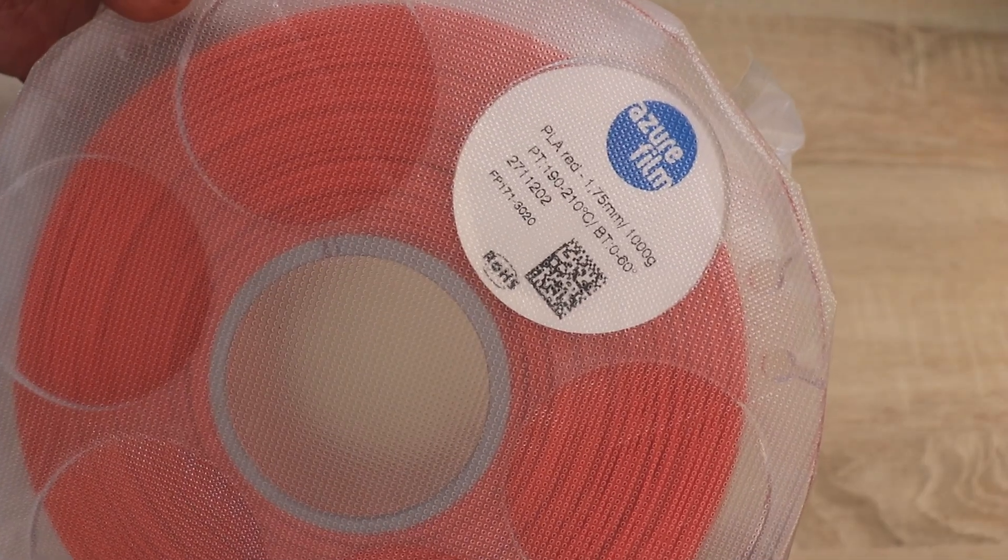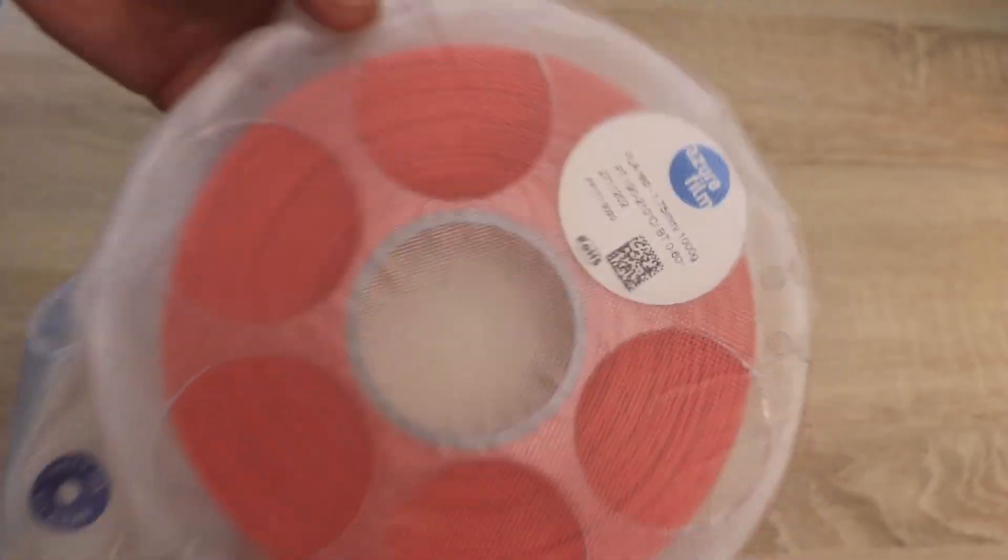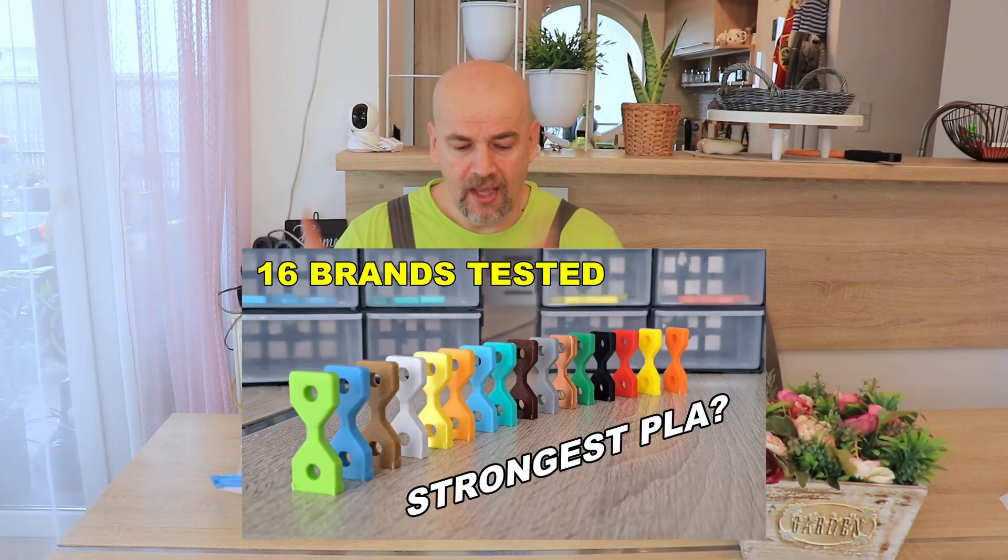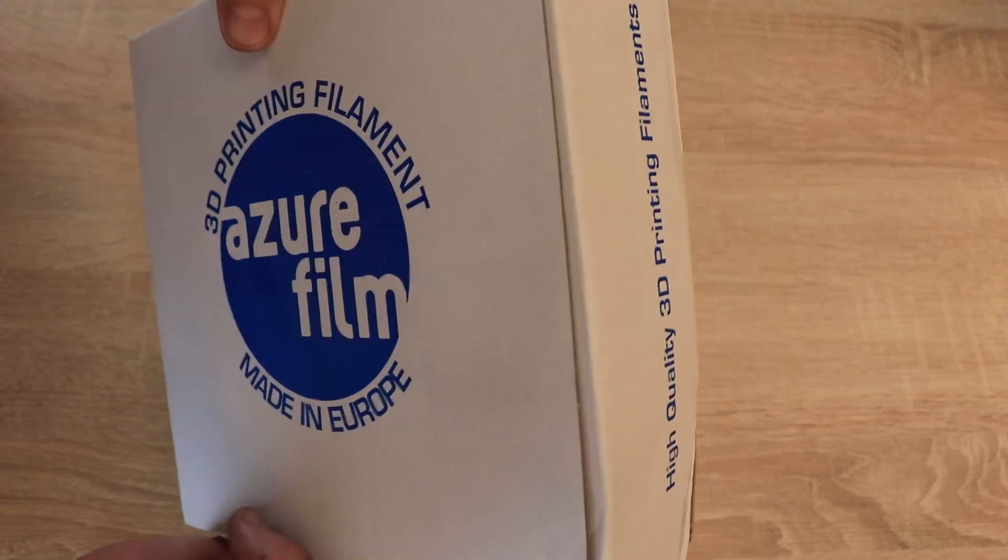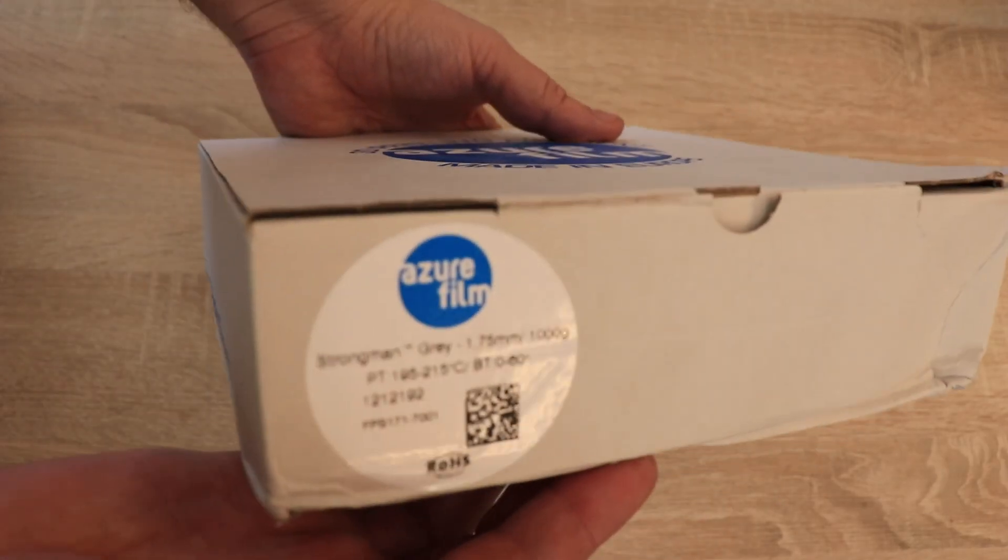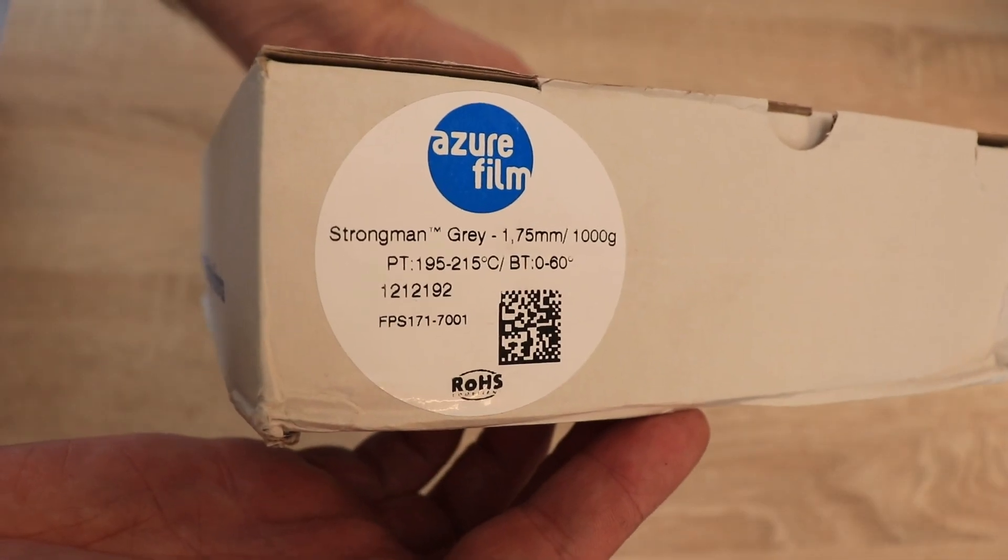This regular PLA was already opened because it was included in the 60 PLA brand comparison video. The PLA Strongman is brand new. I've noticed that many brands have some kind of PLA plus. There's no strict definition of what that plus means. Sometimes it means a bit more heat resistance, like with Gambit filament.